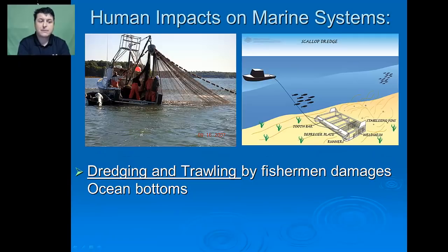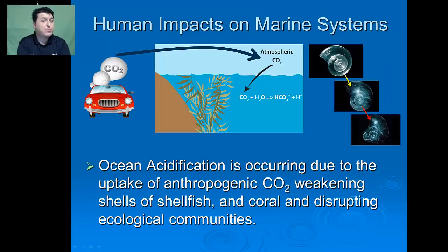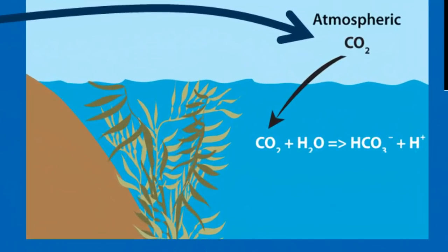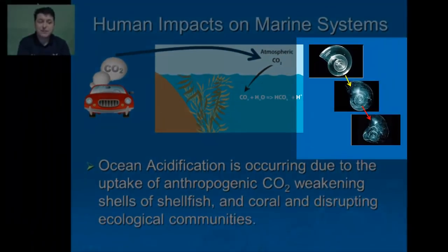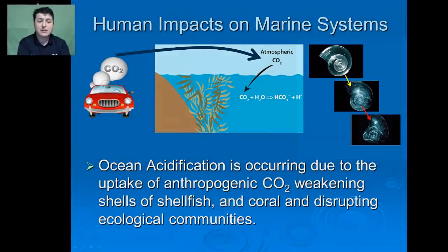Human activities are disrupting habitats for organisms. We also see a decrease in the pH of oceans as they become more acidic. Ocean acidification is occurring due to the uptake of anthropogenic carbon dioxide. As carbon dioxide gets dissolved in the water, it forms carbonic acid, a weak acid. This acidification weakens the shells of shellfish and coral, which further disrupts ecological communities.